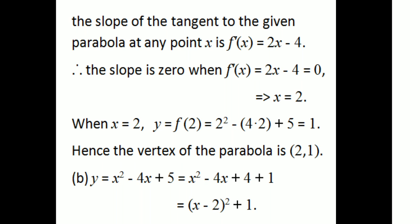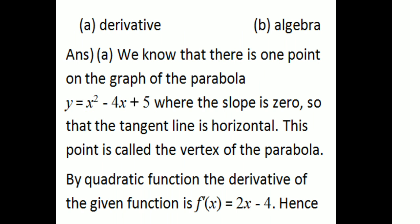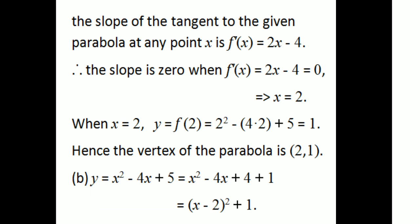Therefore the slope is 0 when f dash of x equals 2x minus 4 equals 0. So 2x minus 4 equals 0, then 2x equals 4, then x equals 2. Substituting x equals 2 into the parabola: y equals 2 squared minus 4 times 2 plus 5, which is 4 minus 8 plus 5 equals 1.